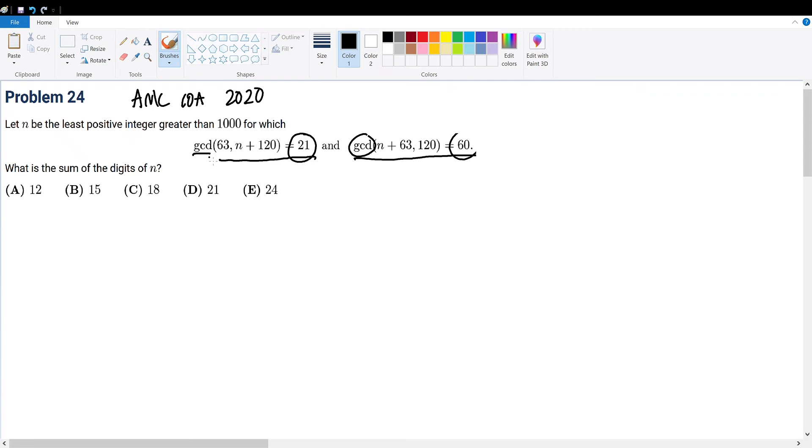AMC 10A in 2020, problem 24. Let n be the least positive integer greater than a thousand for which the following is true. What is the sum of the digits of n? You might see here that I underlined and circled some terms, and that is because I want to emphasize the important parts when reading this question.